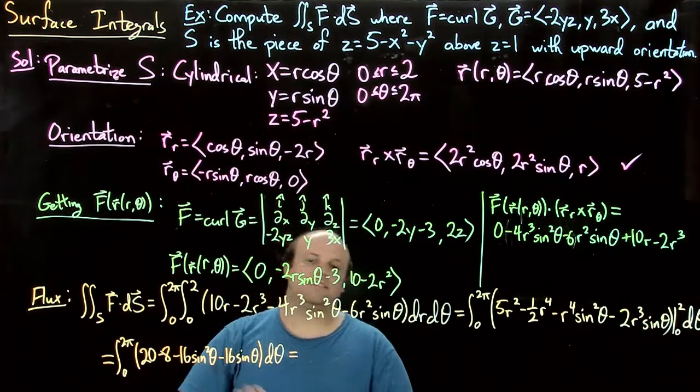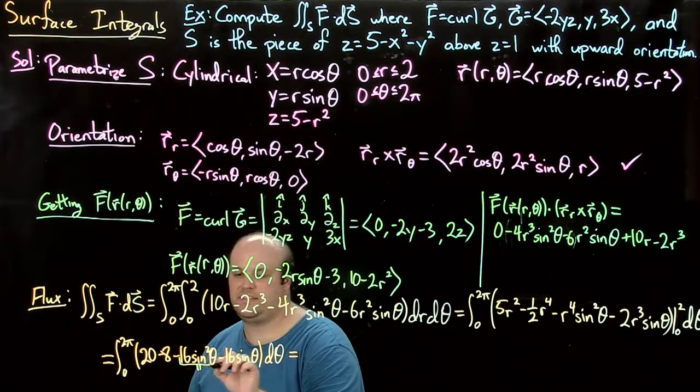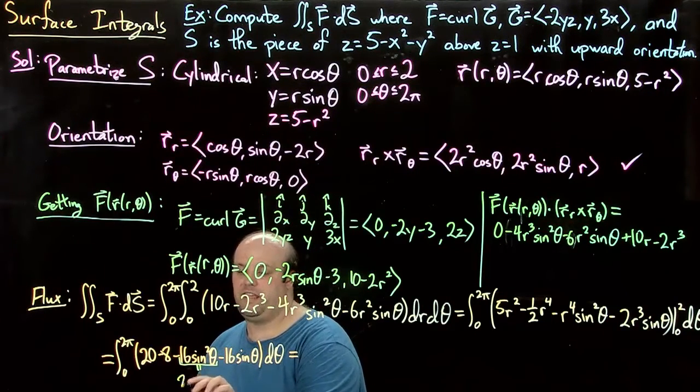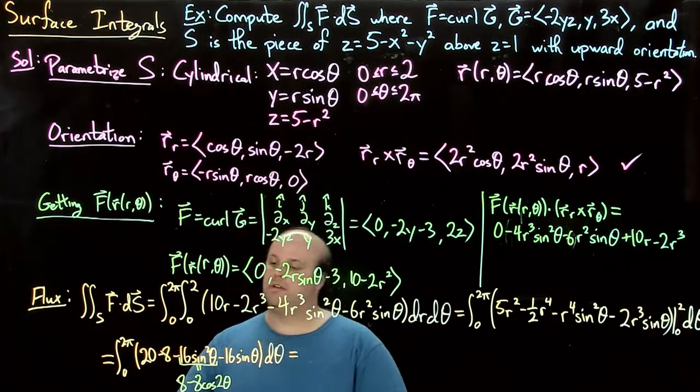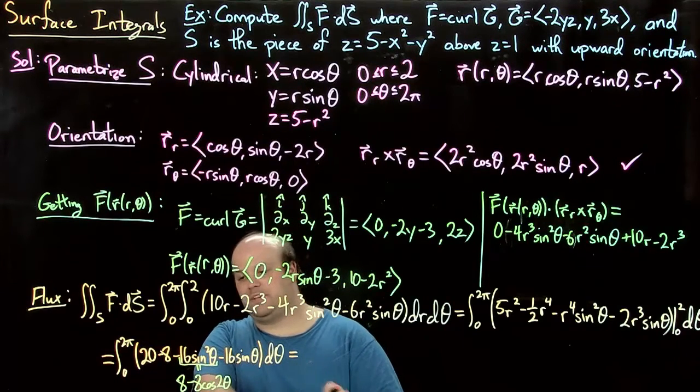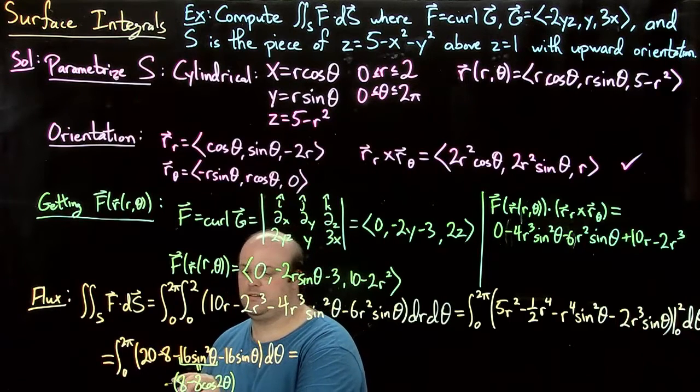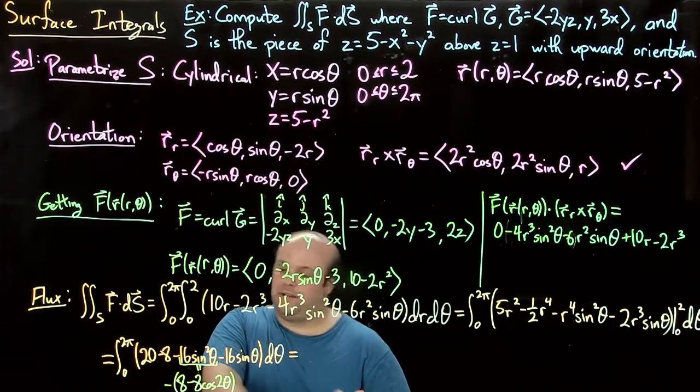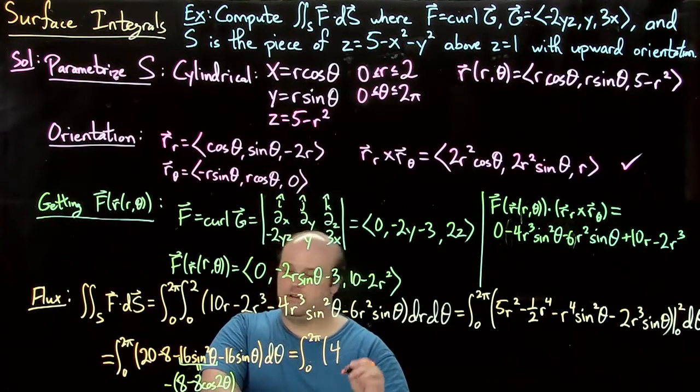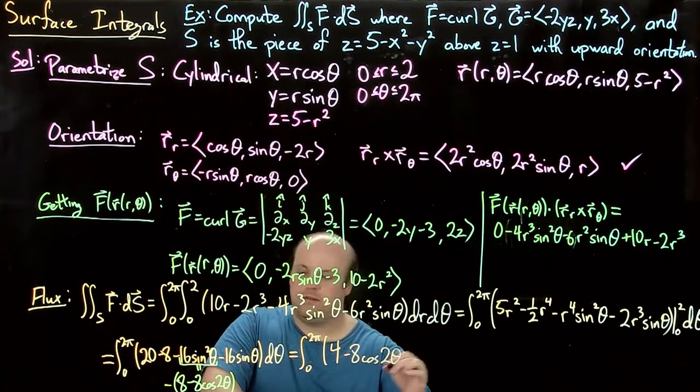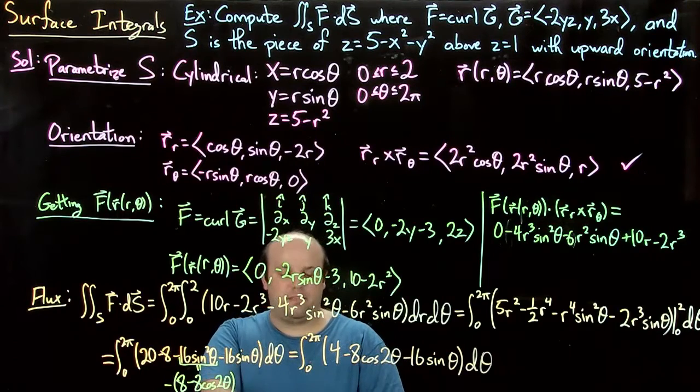As a reminder, 16 sin² θ equals 8 - 8 cos 2θ using the identity. Subtracting that, we have 20 - 8 - 8 = 4, plus 8 cos 2θ, minus 16 sin θ. This becomes the integral from 0 to 2π of [4 - 8 cos 2θ - 16 sin θ] dθ.